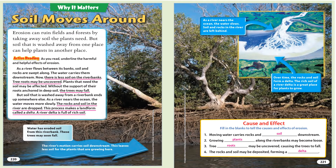Why it matters: soil moves around. Erosion can ruin fields and forests by taking away soil the plants need. But soil that is washed away from one place can help plants in another place. Active reading: as you read, underline the harmful and helpful effects of erosion. As a river flows between its banks, soil and rocks are swept along and carried downstream. Now there is less soil on the riverbanks. Tree roots may be uncovered, and plants that need the soil may be affected. Without the support of their roots anchored in deep soil, the trees may fall.